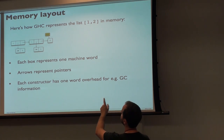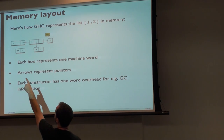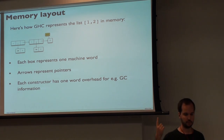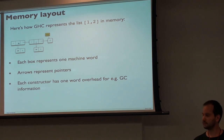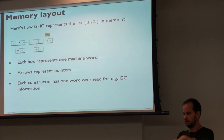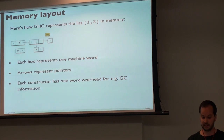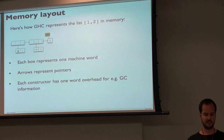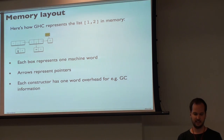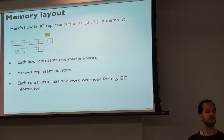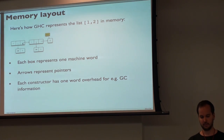We can use this exact principle. The cons constructor — the list node constructor, the colon — takes one word. So that's the first box: one word for the constructor. Then there's the first field in the cons cell. Remember, a cons cell has a pointer to the element and a pointer to the tail. So the pointer to the element is a pointer to an Int. And what does an Int look like on the heap? Well, the Int itself has a constructor, which we usually call I-hash. And then in this heap-allocated box is the real integer value one.